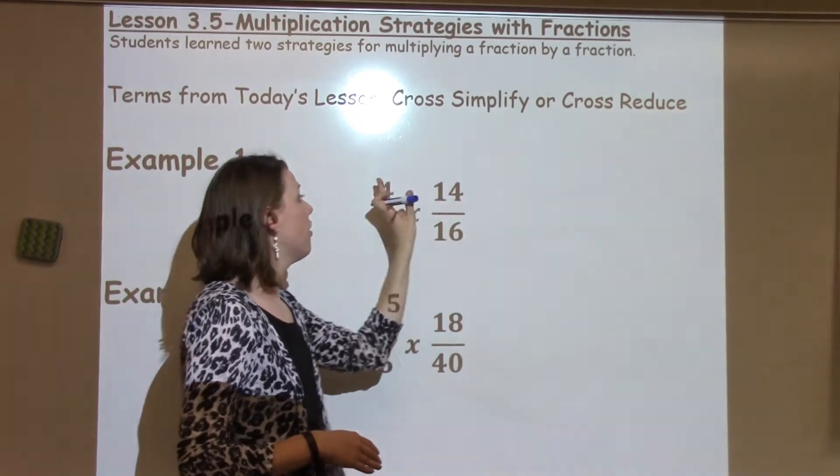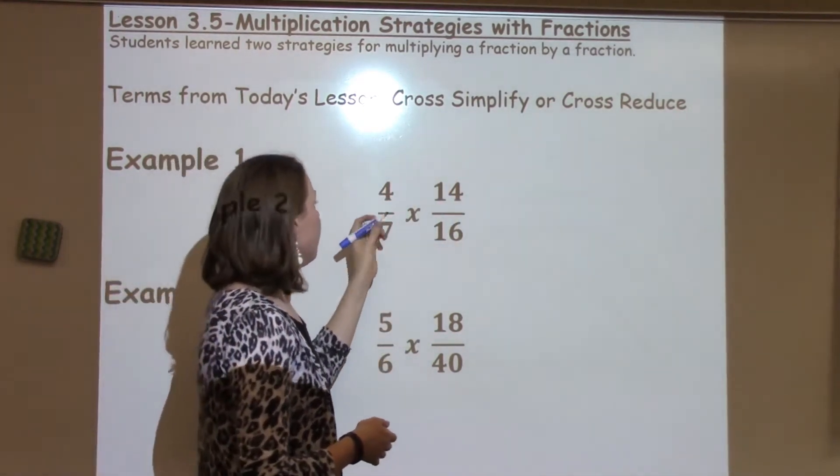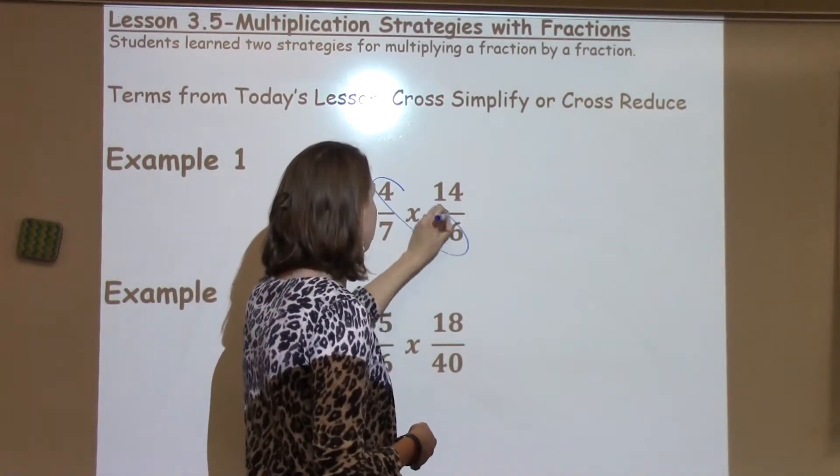Cross just means going across the fractions. This should be a connection from Unit 1 when we talked about the butterfly method. So the very first thing students can do is go ahead and make those butterfly wings.